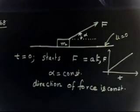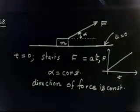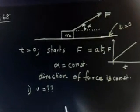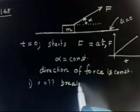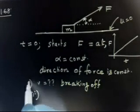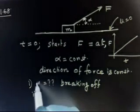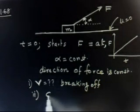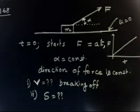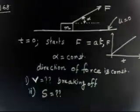We need to find the velocity of the object when the object leaves the plane — that is, breaking off. Find the velocity at the time of breaking off. The second part asks for the distance covered by the object up to this moment. So first find the velocity, second find the distance traveled up to when it just breaks off.